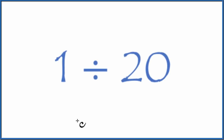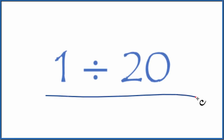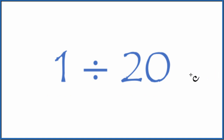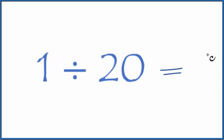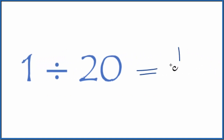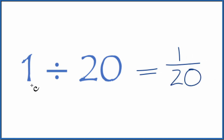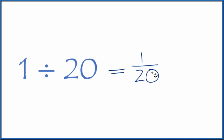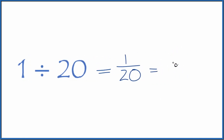All right, let's divide 1 by 20. First off, let's consider this to be a fraction, because 1 divided by 20 is the same as the fraction 1 over 20, or 1 20th. You could also divide 1 by 20 on your calculator. So 1 divided by 20, that gives you the decimal 0.05.